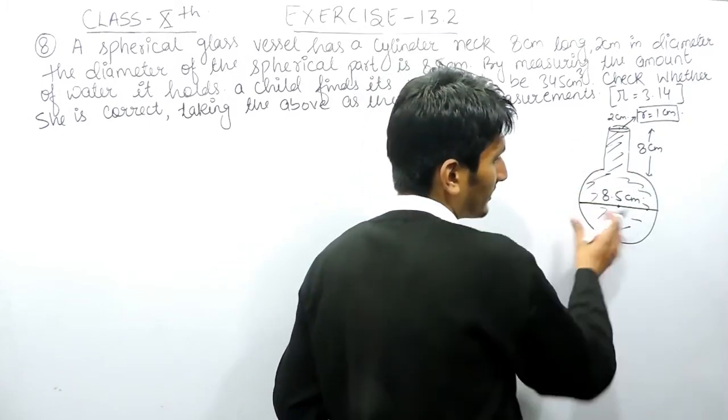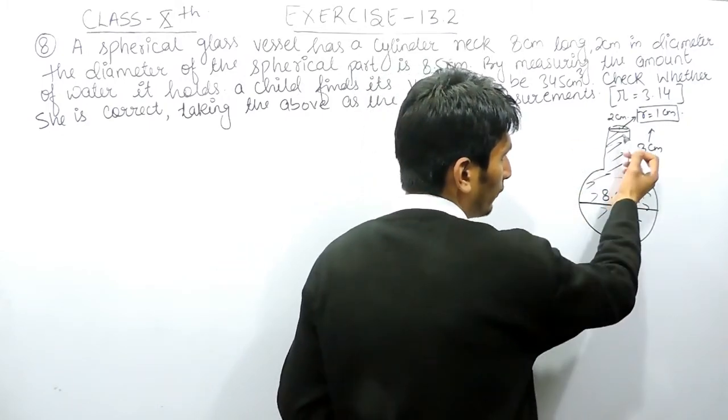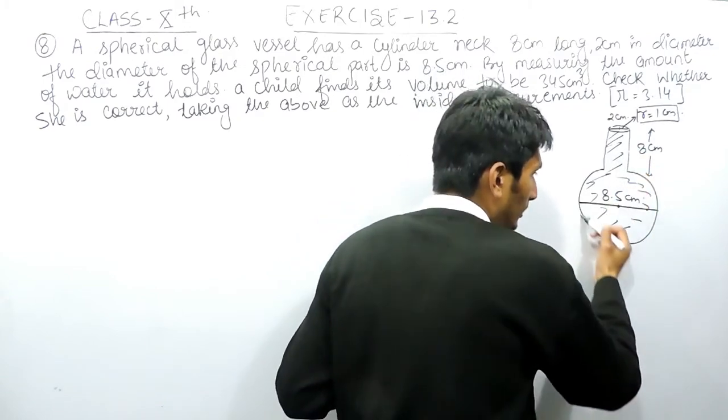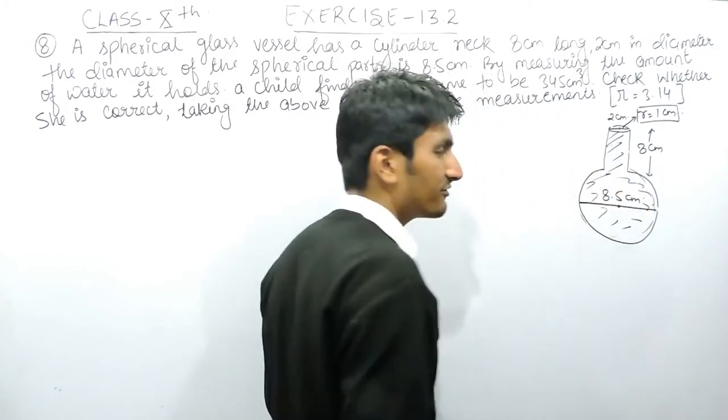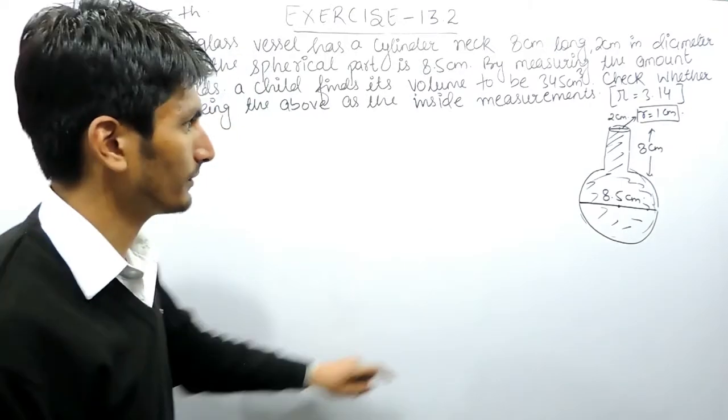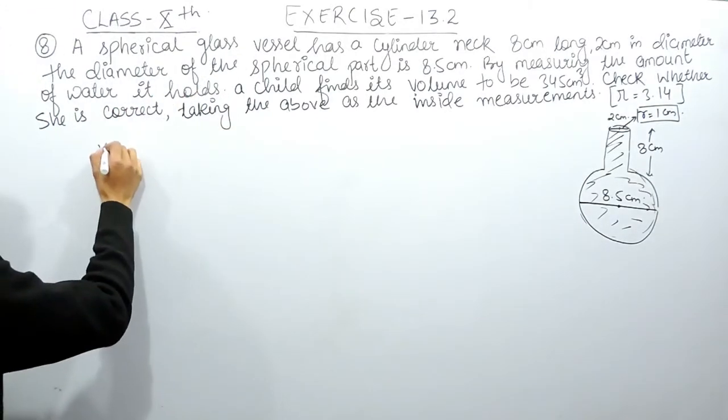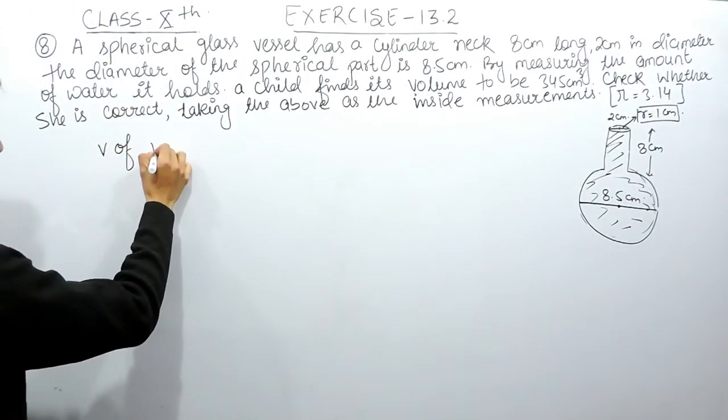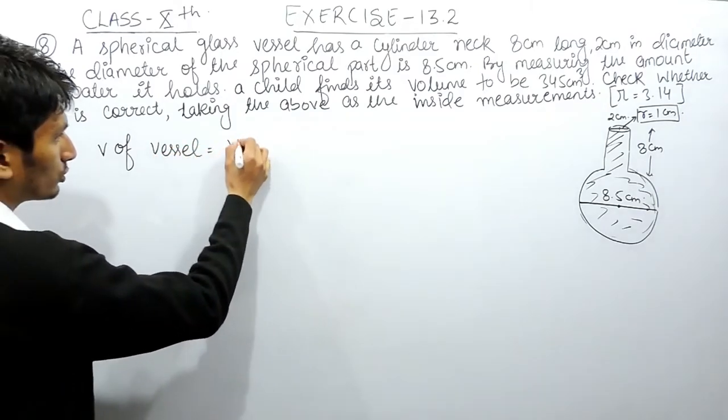If you want to find the volume of this vessel, this complete vessel will be equal to the volume of the sphere plus the volume of the cylinder.